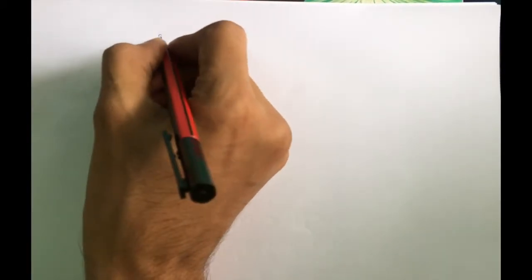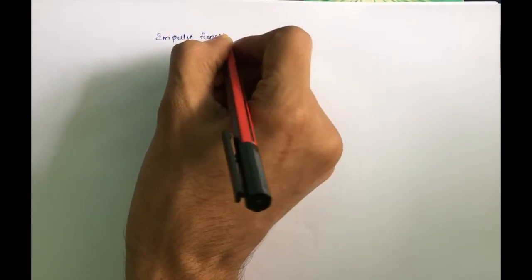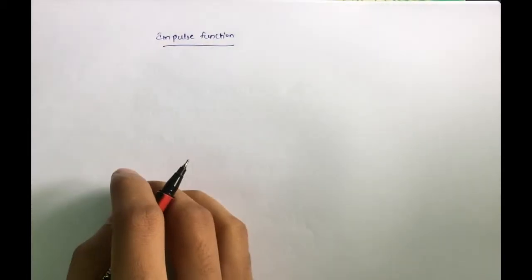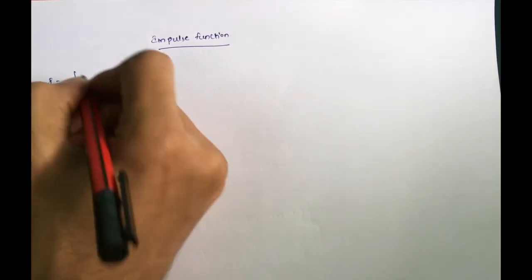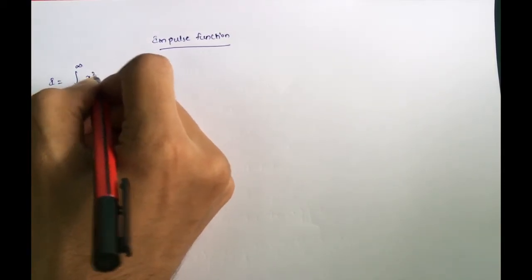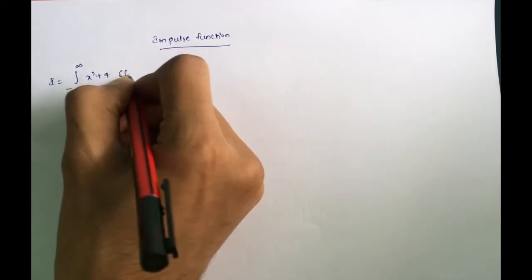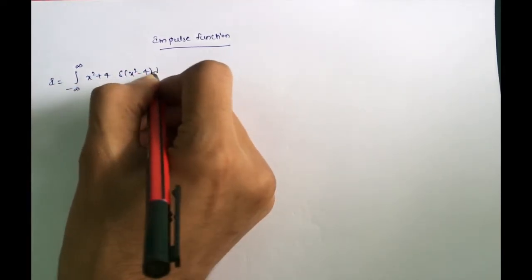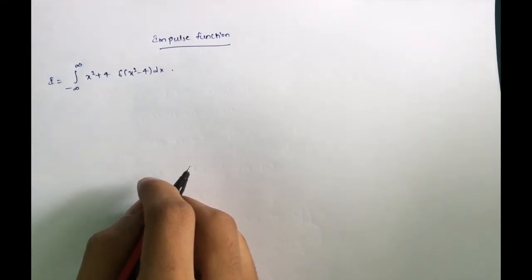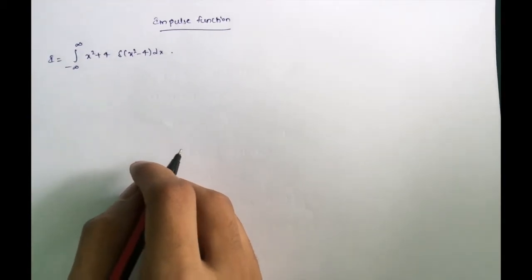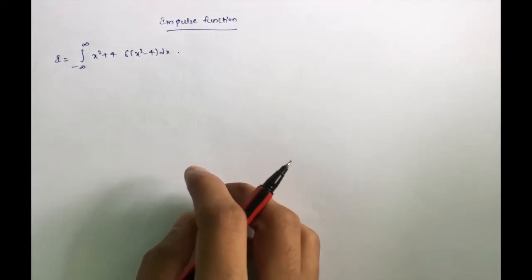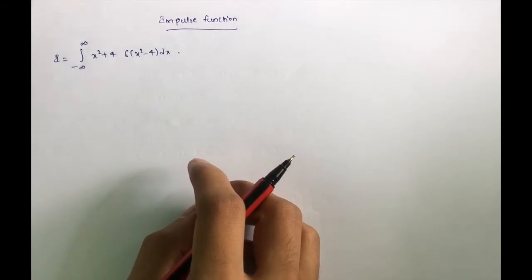The topic of discussion today is the impulse function. Let's take an example: the integral from minus infinity to infinity of (x² + 4) · δ(x² - 4) dx. This is the sum in question we need to solve, and it includes the impulse function.